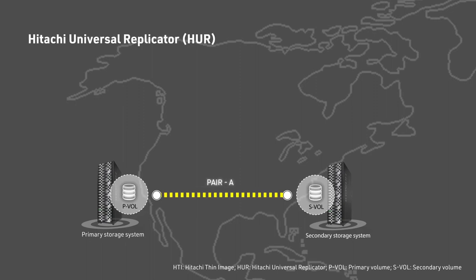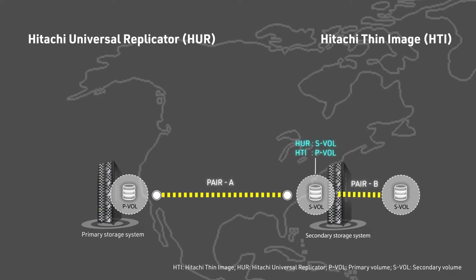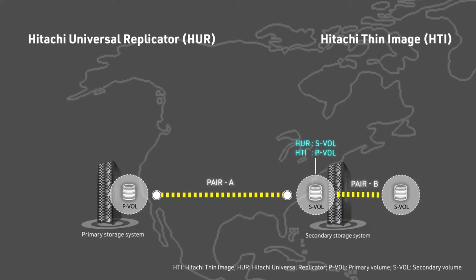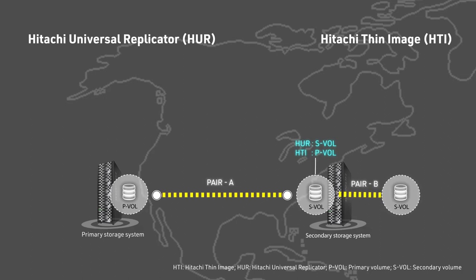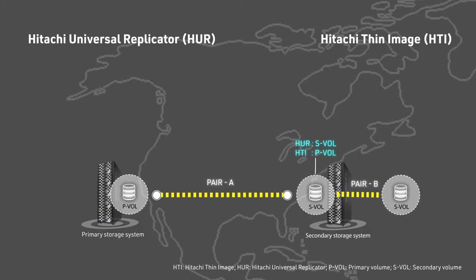This is a typical Universal Replicator and Thin Image shared volume configuration. The Thin Image pair, pair B, is used to create point-in-time copies of the Universal Replicator secondary volume in pair A. The Thin Image secondary volume can be used for purposes such as backup or development.